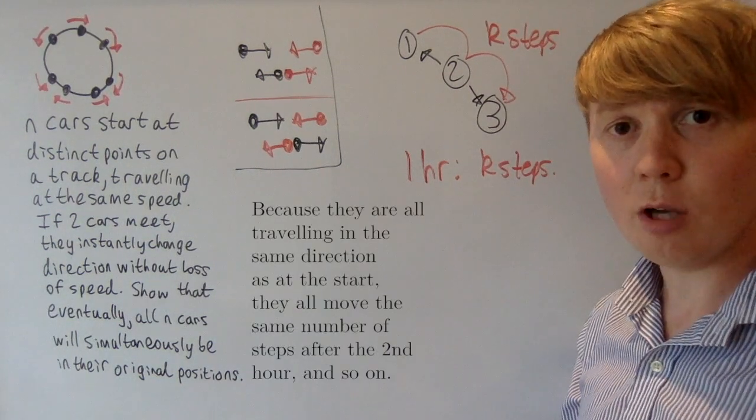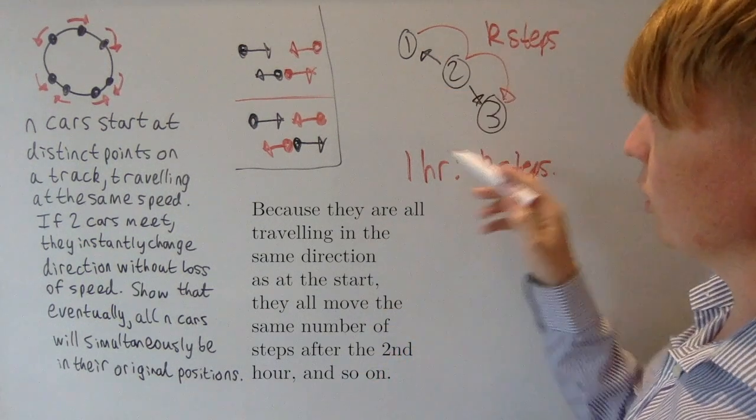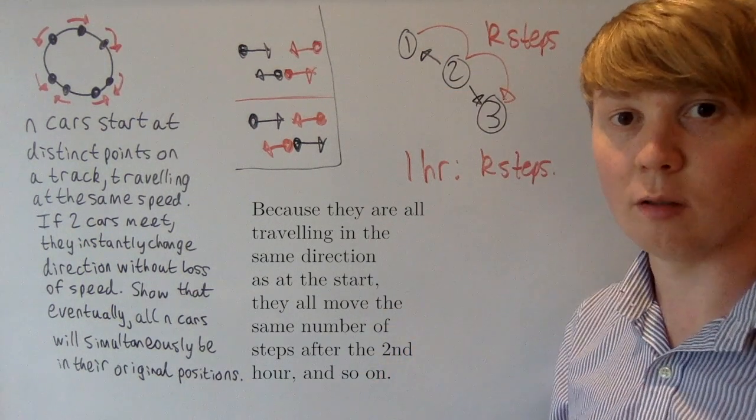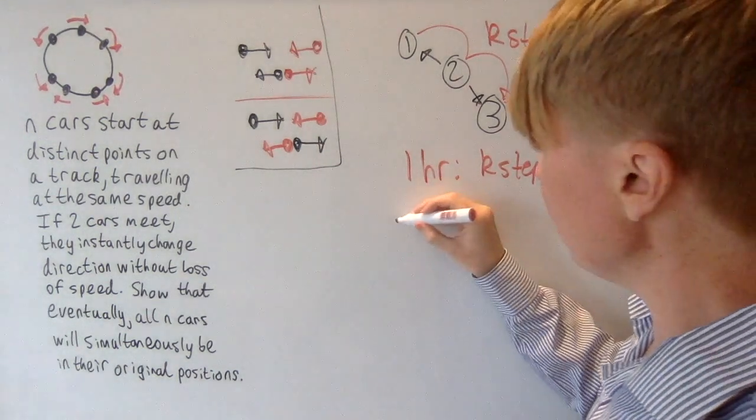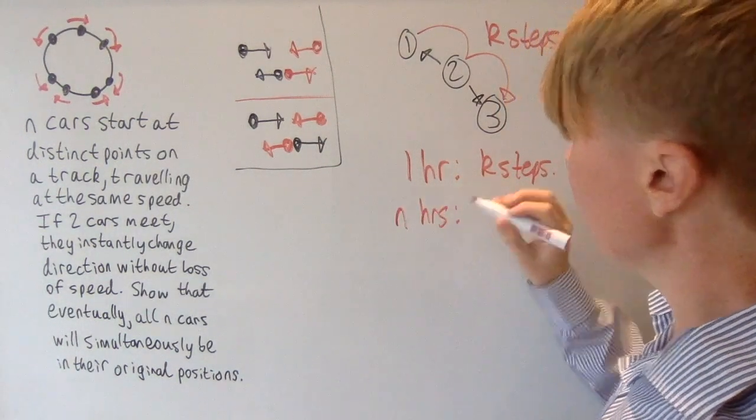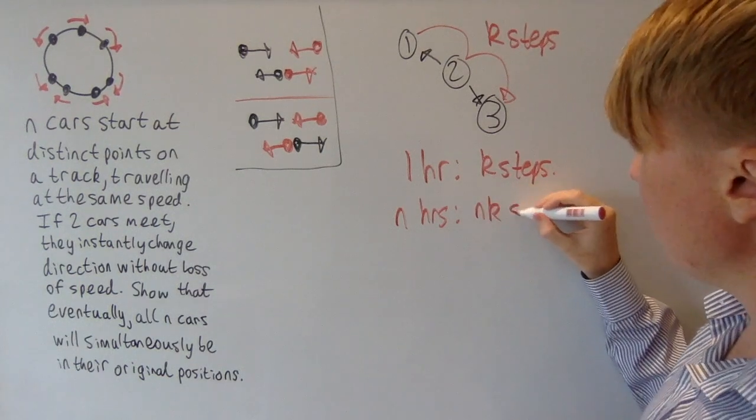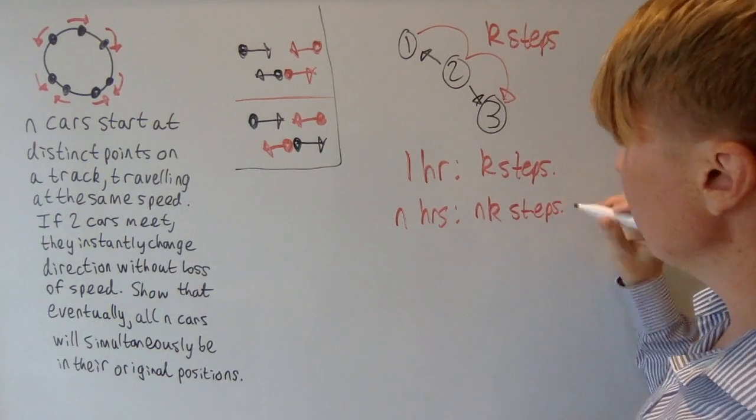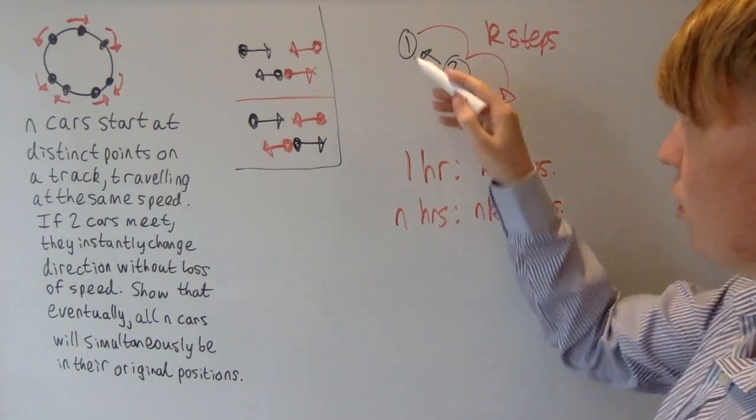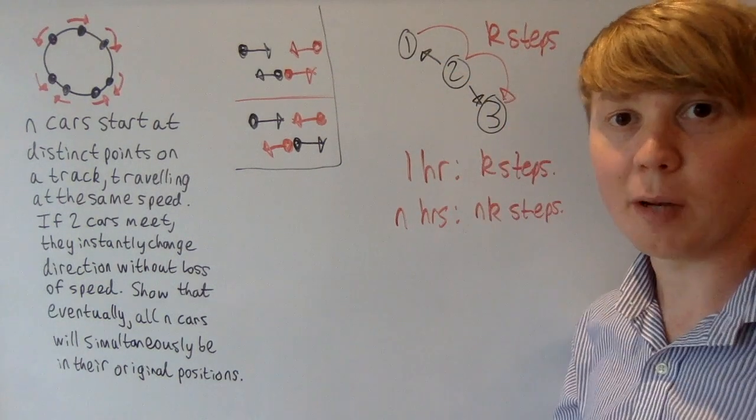So we can just keep going here essentially until all of our cars go back into their original configuration. So if we were to go for n hours, where n is our number of cars, then each car will have gone n times k steps. You can see here n times k steps, if you go around n steps, you're actually back to where you started.